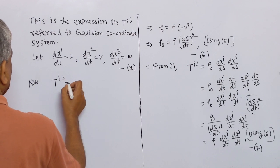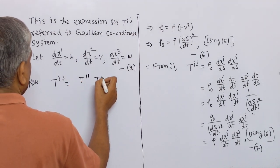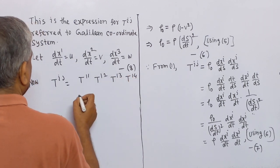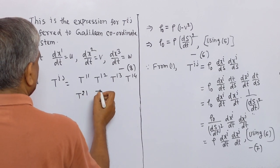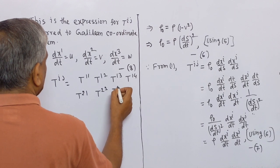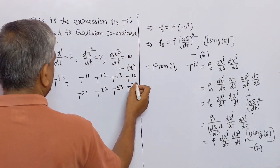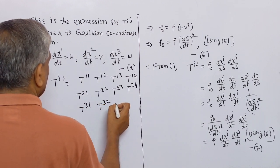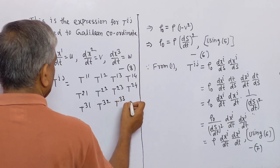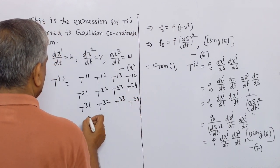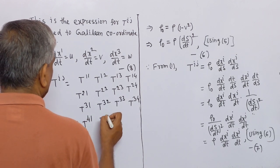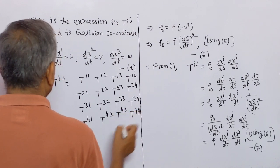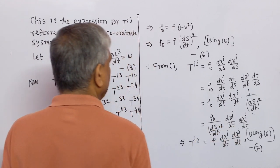Tⁱʲ is a 4×4 matrix with components T¹¹, T¹², T¹³, T¹⁴ in the first row; T²¹, T²², T²³, T²⁴ in the second row; T³¹, T³², T³³, T³⁴ in the third row; and T⁴¹, T⁴², T⁴³, T⁴⁴ in the fourth row.